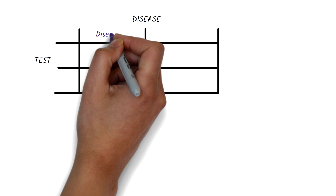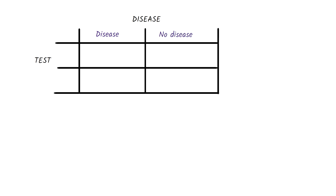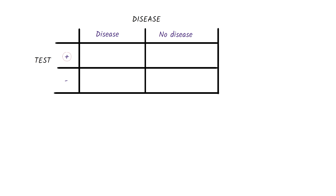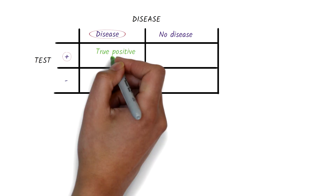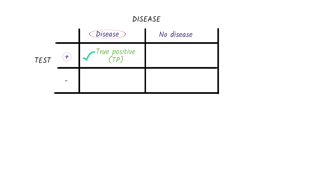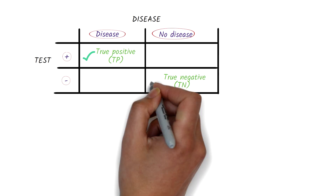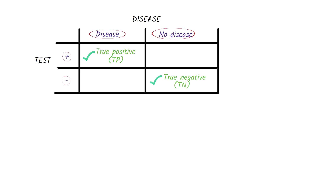There are people with a disease and those without the disease. When we do a test on someone, it can be either positive or negative. If the test is positive, it should mean that the person has the disease — this is called a true positive, as it correctly identifies a person with the disease. Similarly, if a test is negative, it should mean that a person does not have the disease. This is called a true negative, as it correctly identifies a person without the disease.